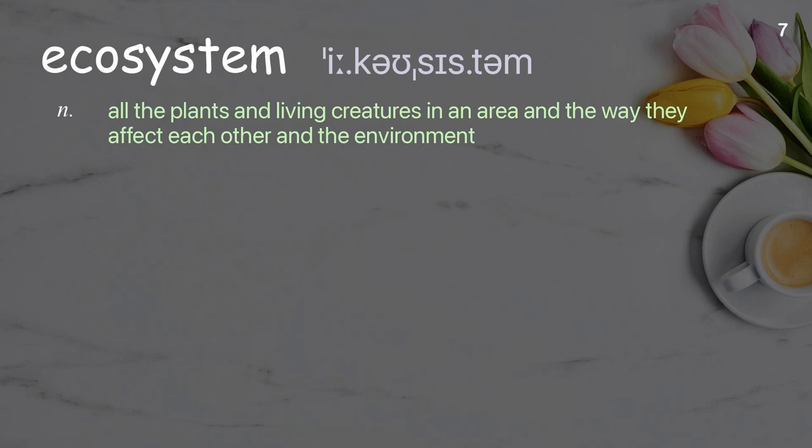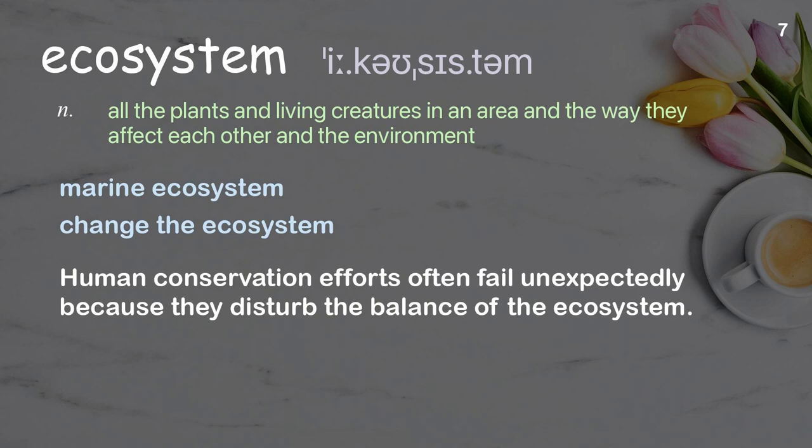Ecosystem: all the plants and living creatures in an area and the way they affect each other and the environment. Examples: marine ecosystem, change the ecosystem. Human conservation efforts often fail unexpectedly because they disturb the balance of the ecosystem.